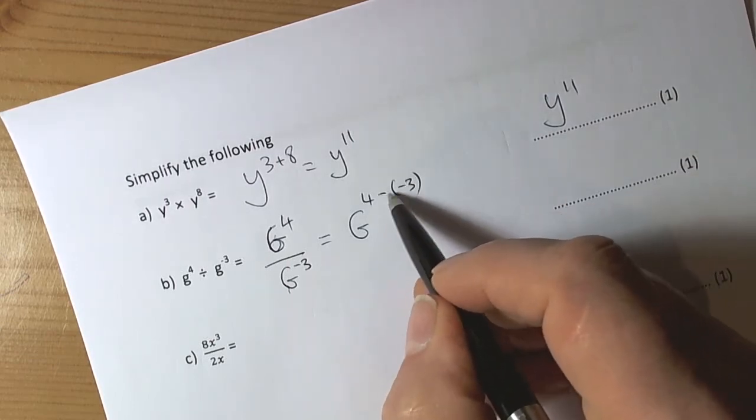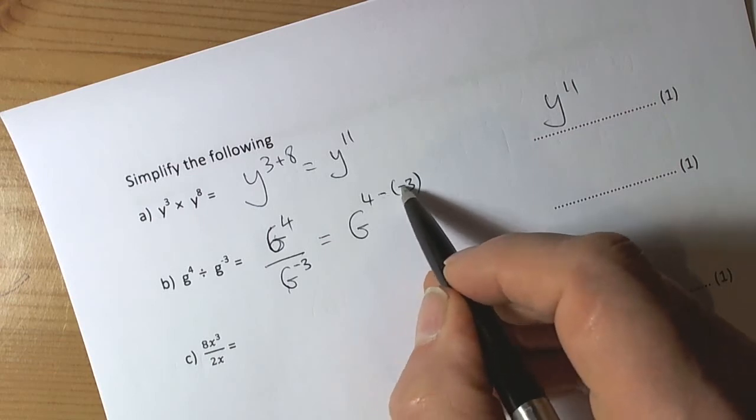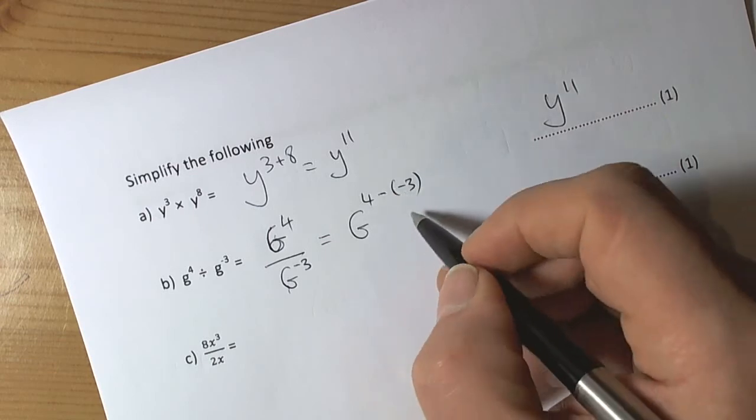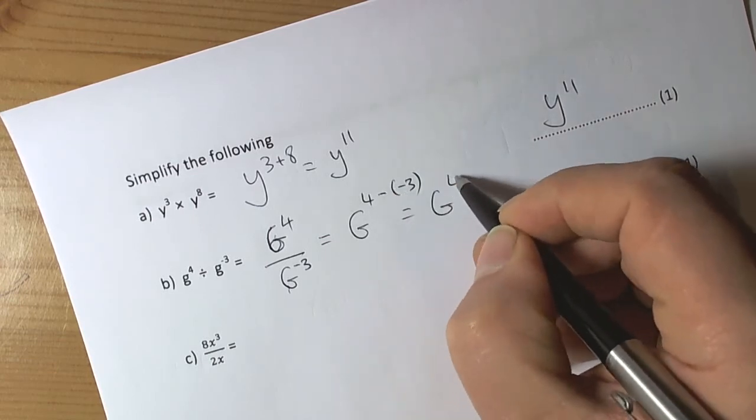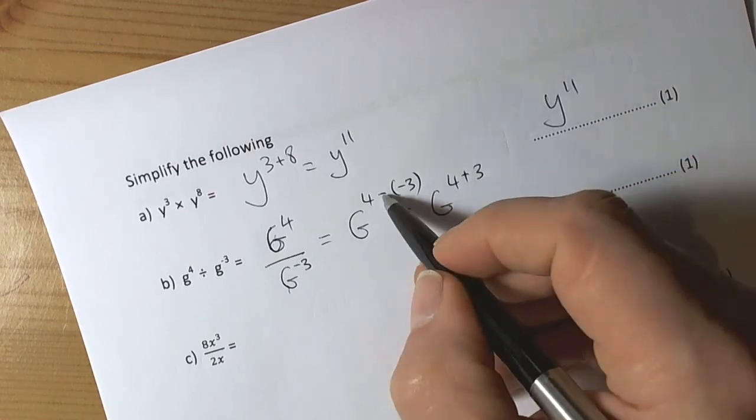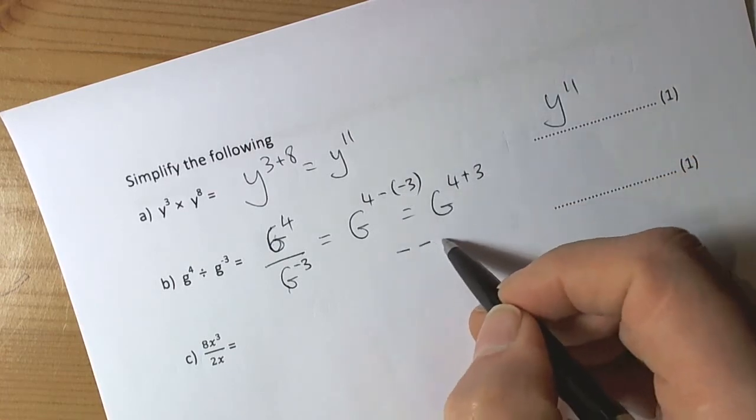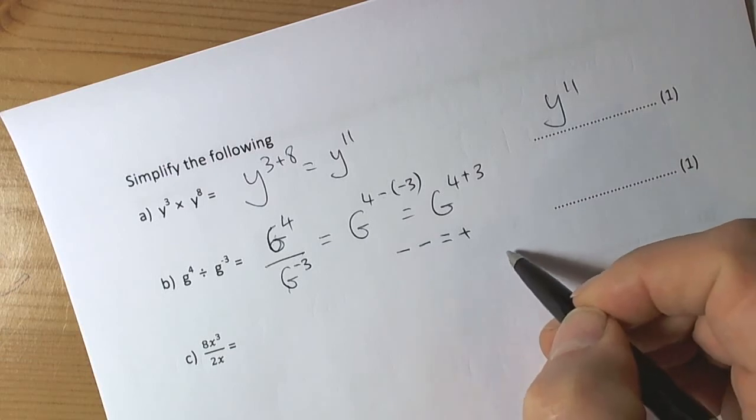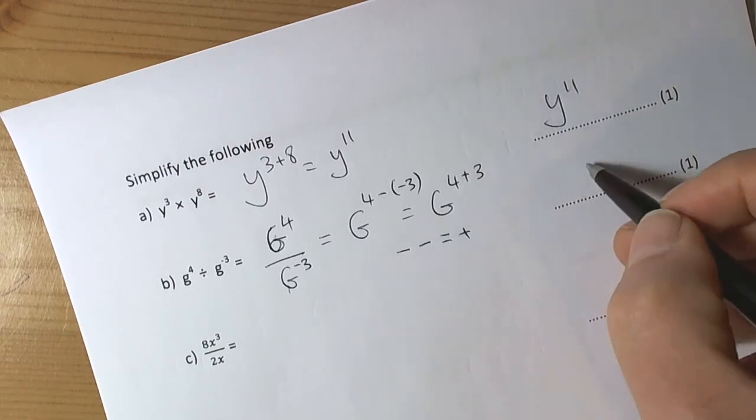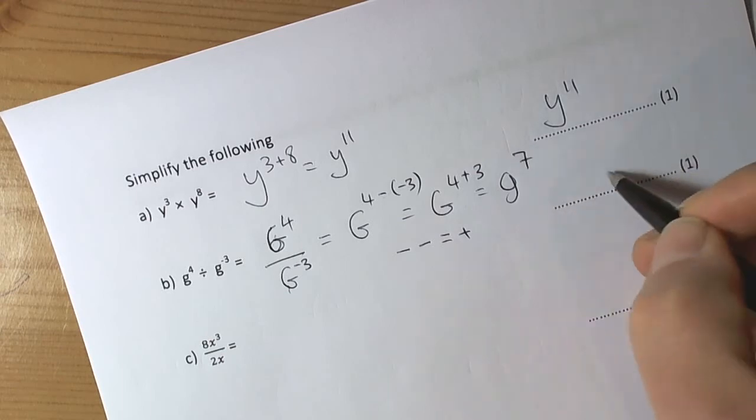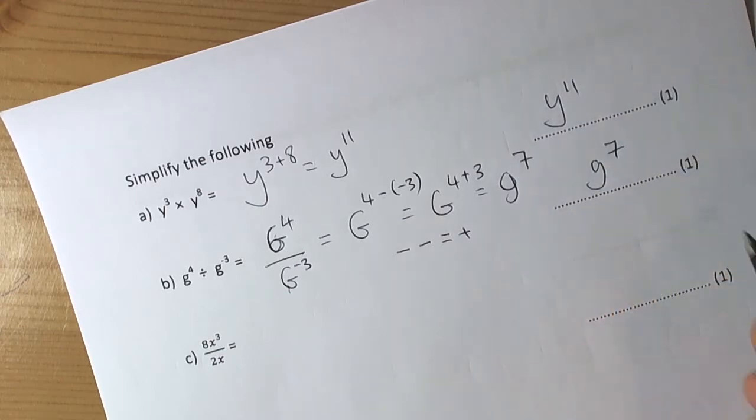So here we've got to be careful because we've got a double minus sign, a double negative sign going on here, so we end up with g to the power of 4 plus 3. Two negative signs, two minus signs next to each other, then they change into a positive. So we get g to the power of 7.